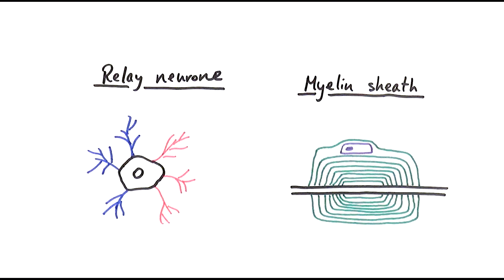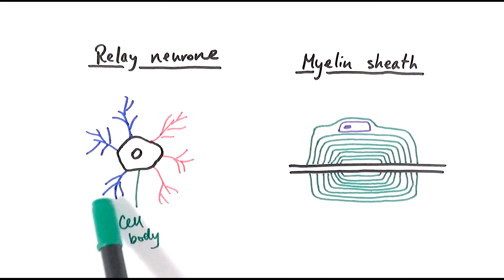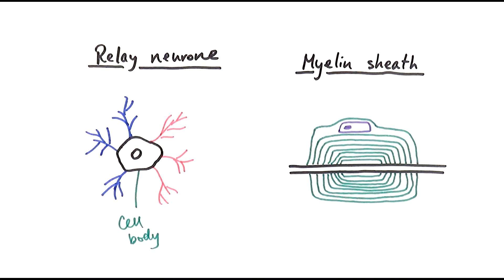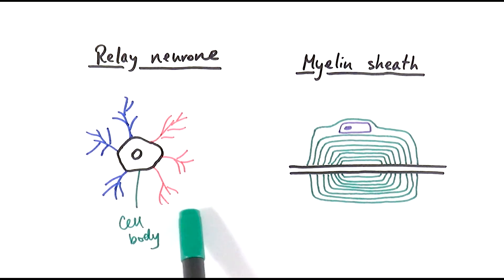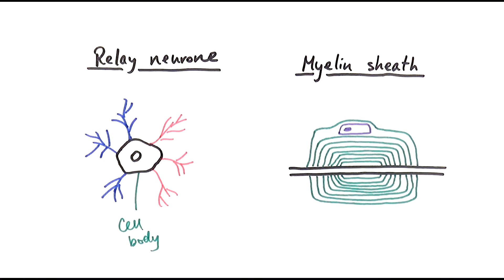Between the sensory and motor neuron we have the relay neuron, found in the spinal cord for example. The relay neuron has the cell body in the middle, and it's smaller than the motor and sensory neurons. The blue branches are the dendrites, which receive the signal from the sensory neuron. The red branches are the axons, which send the signal away from the cell body to the motor neuron. So the blue dendrites receive, and the red axons relay the signal onward.